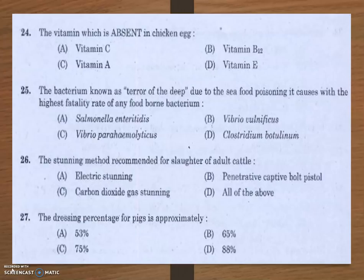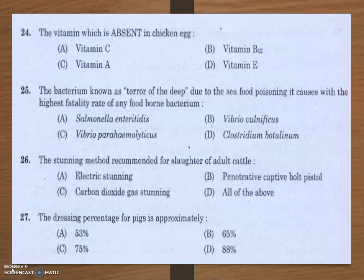Next question: the dressing percentage of pigs is approximately? Options are 53%, 65%, 75%, and 88%. The dressing percentage is calculated by dividing the warm carcass weight by the shrunk live weight of the animal, expressed as a percentage. For pigs it is approximately 75%.